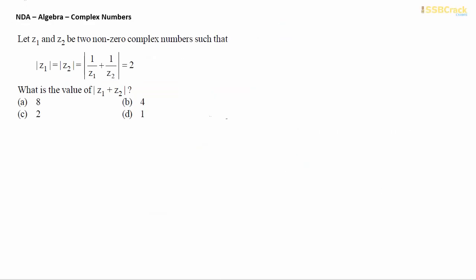So let's move on to the question now. Here is question number one on complex numbers. Two complex numbers are defined and they are set to be non-zero complex numbers such that modulus of z1 equals to modulus of z2 equals to modulus of 1 upon z1 plus 1 upon z2 equals to 2.